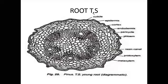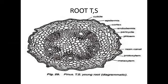Pinus root TS (transverse section) shows a spiroidal outline with ridges and furrows. It shows mainly three major portions: one is epidermis, second one is cortex, and third one is stele. The epidermis is the outermost layer.